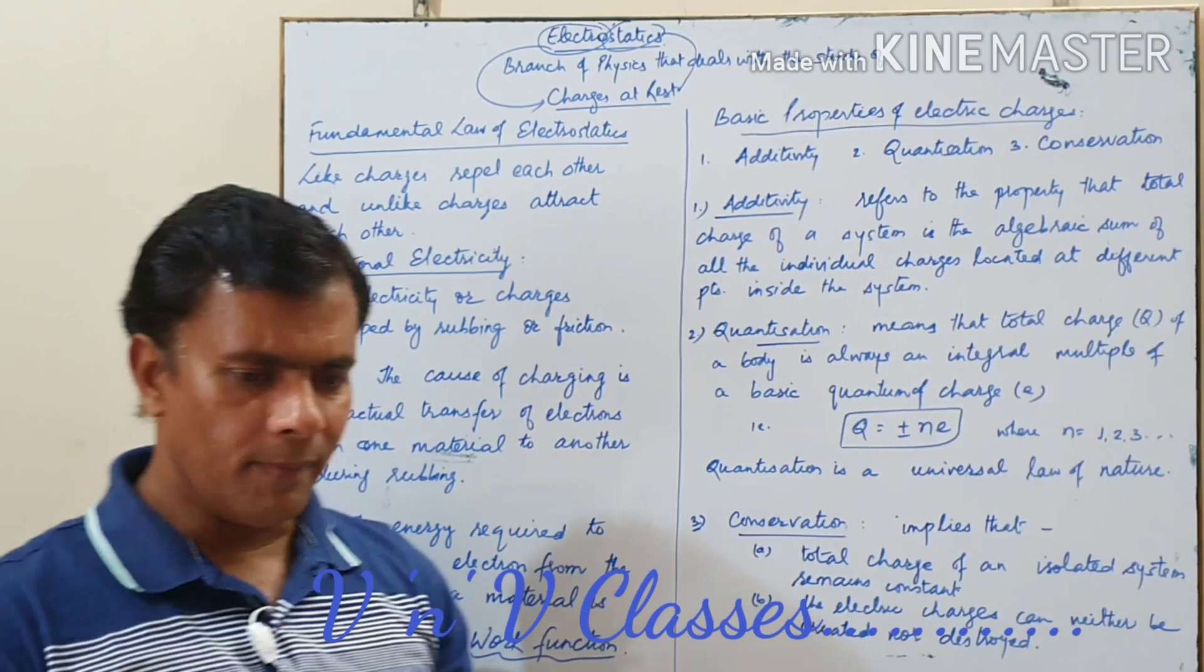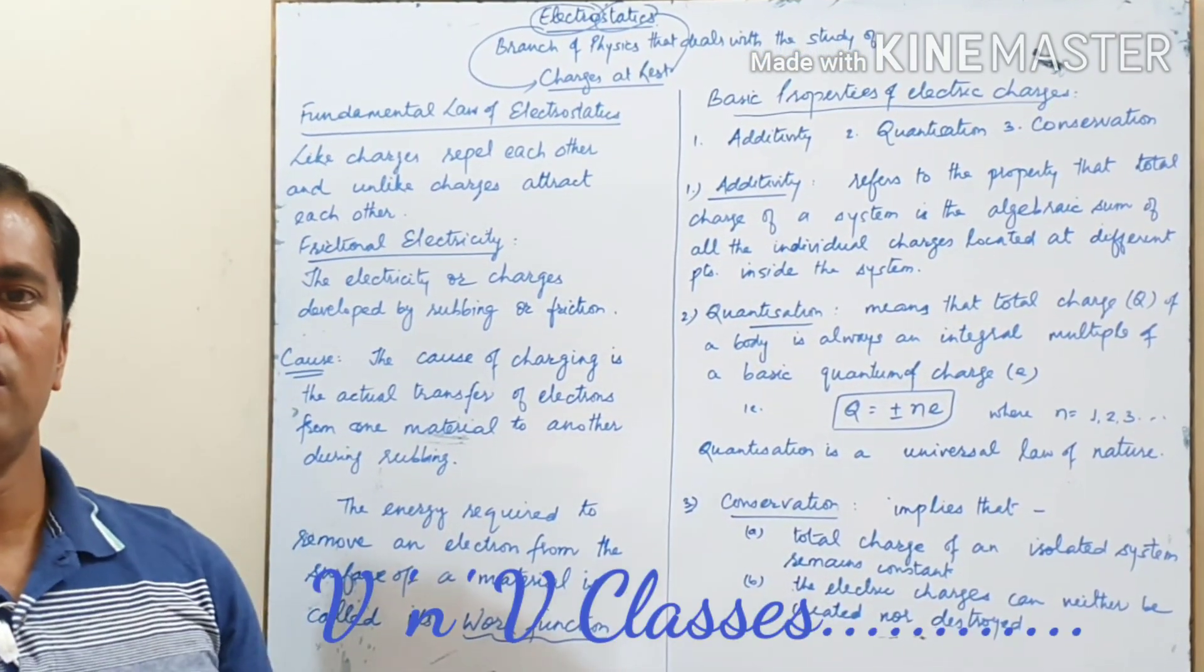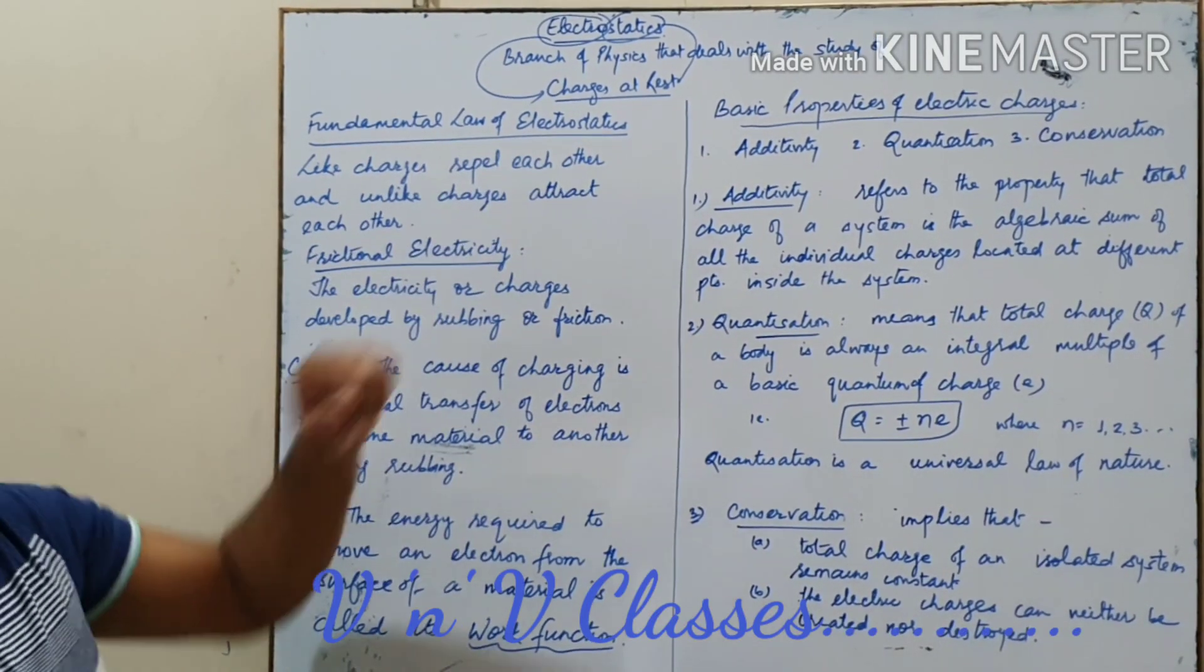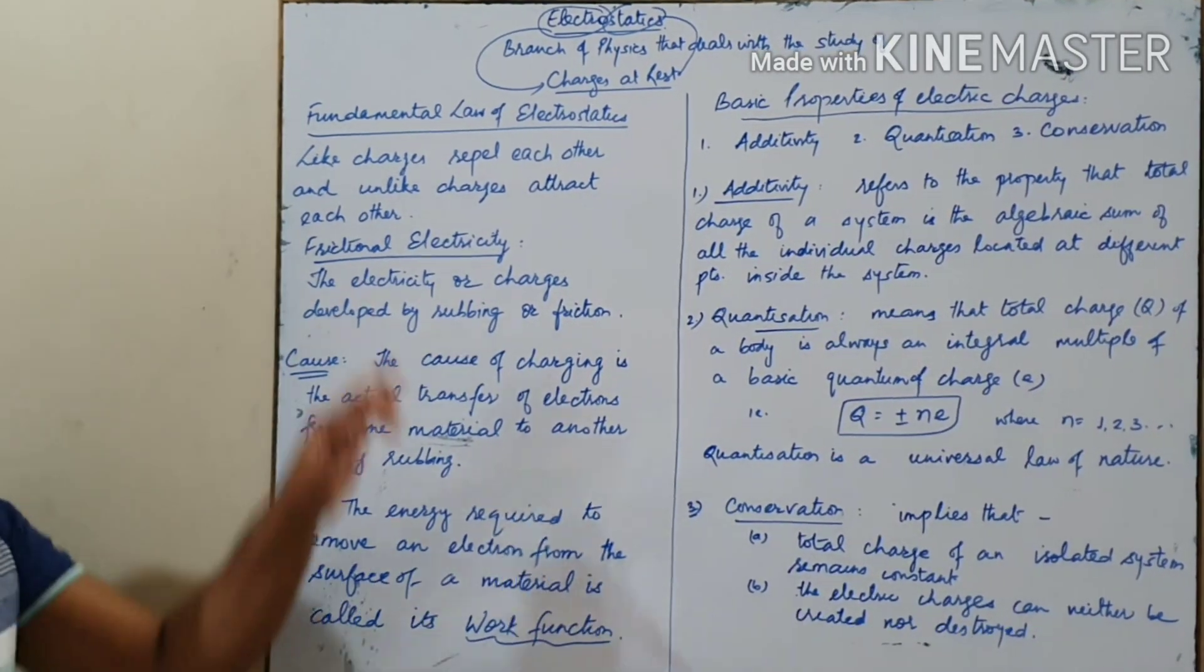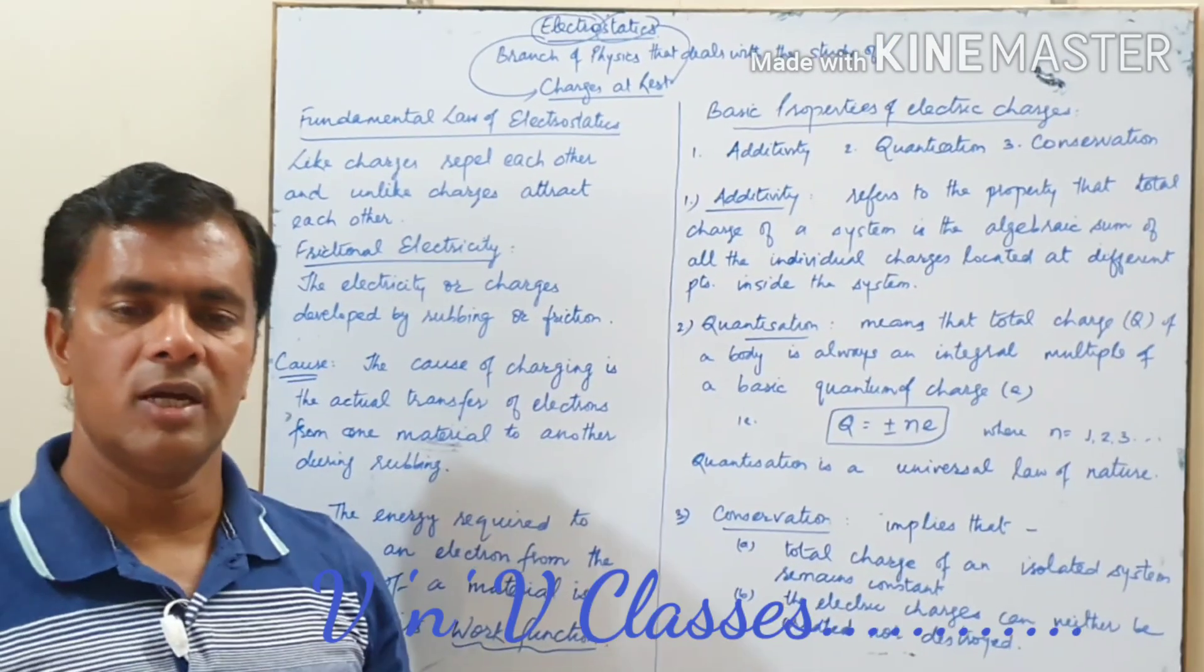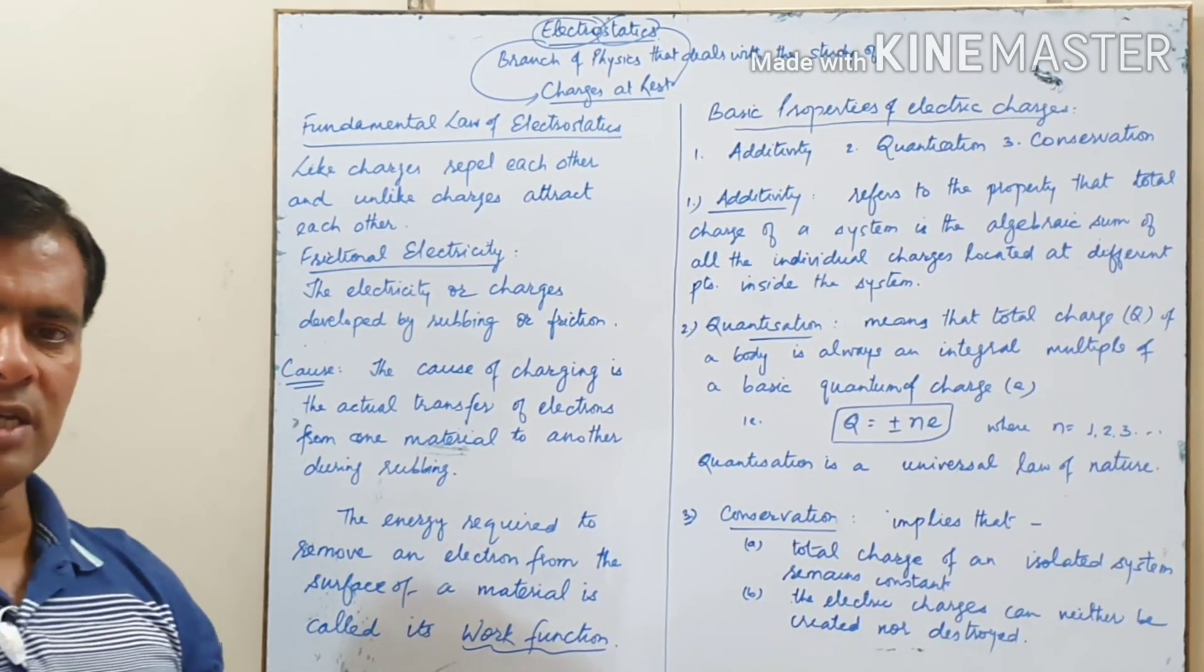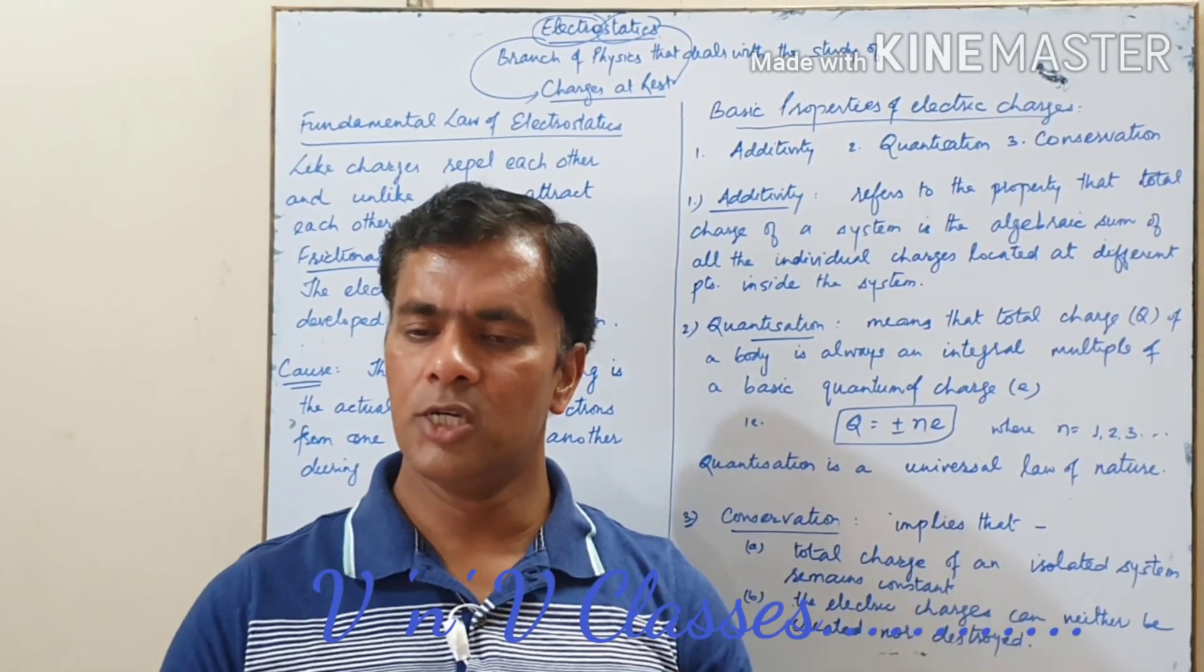Now we all know fundamentally there are two types of charges, one positive and one negative. For these two types of charges we have got a fundamental law of electrostatics. We all are familiar to this. That like charges repel each other and the unlike charges attract each other. This is the fundamental law of electrostatics.